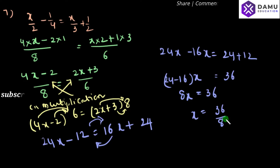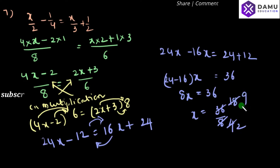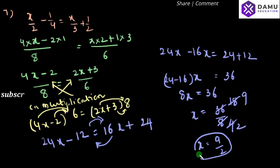So, 8x will be equal to 36, then x will be equal to 36 by 8. Simplifying, x will be equal to 9 by 2. So, x equals 9 by 2. Thanks for watching, please subscribe.